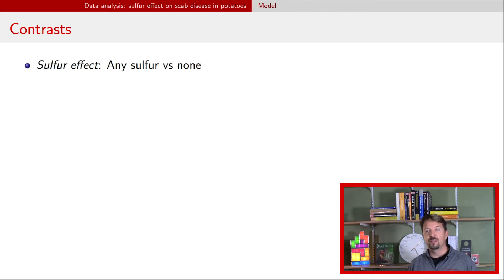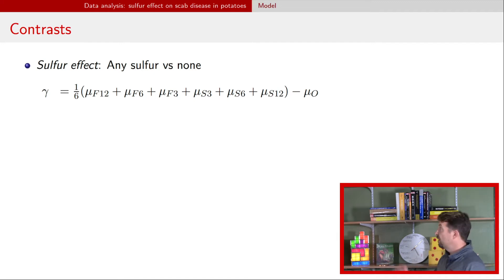So to start off with, let's talk about the sulfur effect. Is there any effect of sulfur? This contrast we're going to construct by saying, look, we have one group that has no sulfur, and then we have a bunch of other groups that have some sulfur. And so we're going to compare those two means. So here that mu subscript zero, although that kind of looks like a capital O, but that one is going to indicate no sulfur at all. And then the other ones here are all the other sulfurs. There are six of those. And so we're going to take their average. That's why we have the one sixth times that whole quantity.